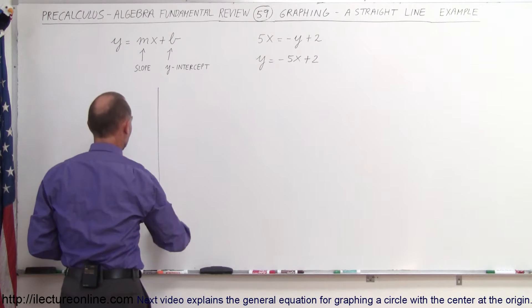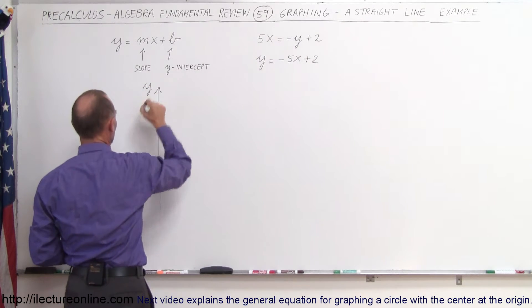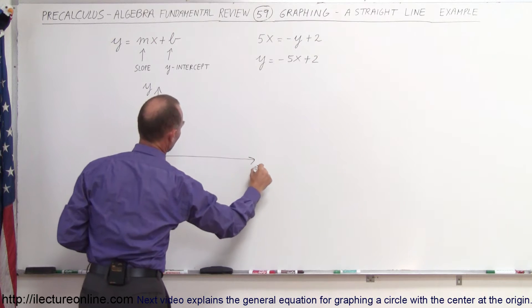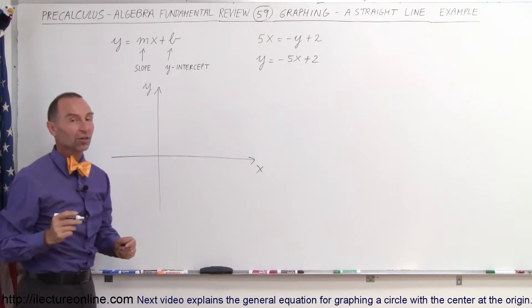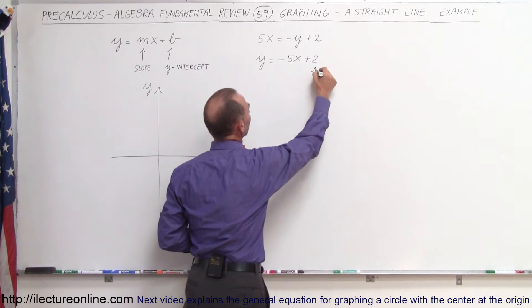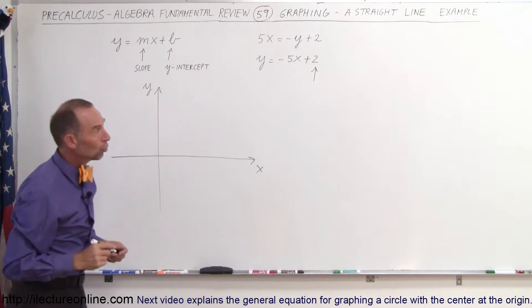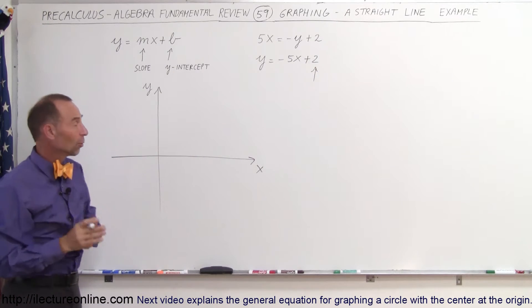Now we draw the y-axis, so here's our y-axis, here's our x-axis, and we find the y-intercept. So always start with the y-intercept, in this case that's the number 2, and it's the place where the line crosses the y-axis.